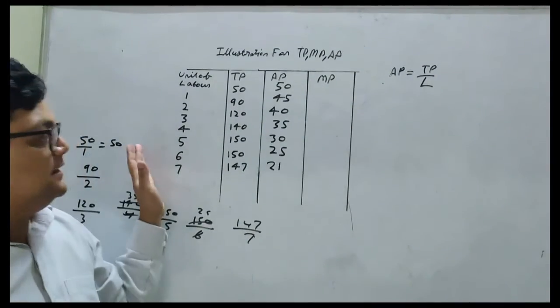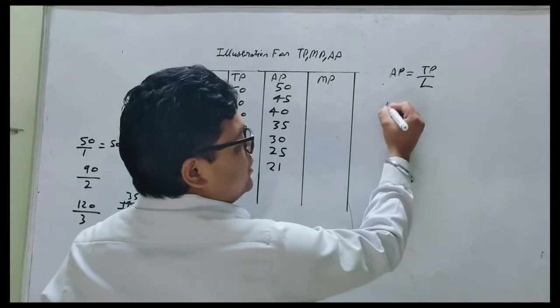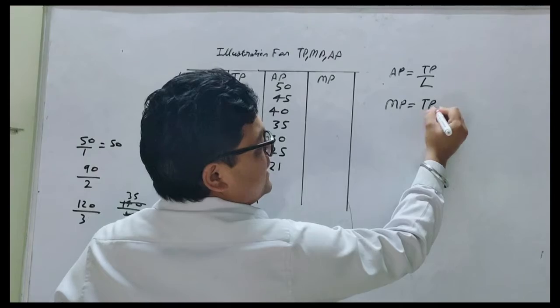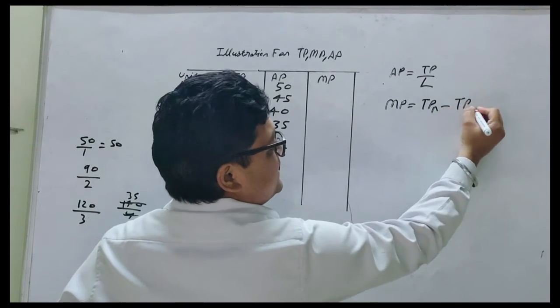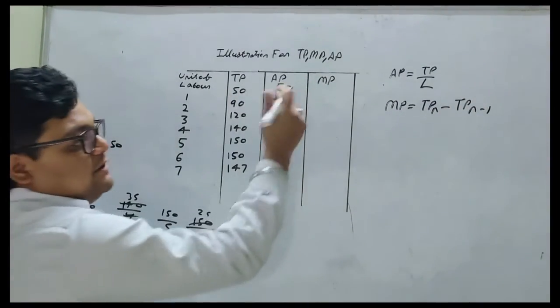Now we have to find out MP. So as you all know, MP formula is total product n minus total product n minus 1. So first MP and first TP will always be the same.